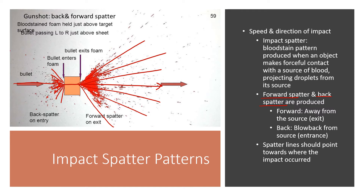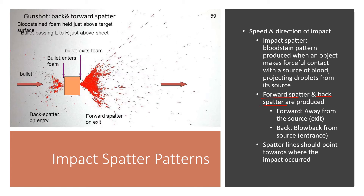If you have a penetrating wound, your forward spatter will be in the same direction the bullet was traveling, and the back spatter will be pointing toward where it came from. If you have impact spatter from blunt trauma — repeated blunt trauma that eventually causes bleeding, like being beaten with a baseball bat — you will have spatter going in the direction from which the bat came, as well as in the general direction the bat was headed.